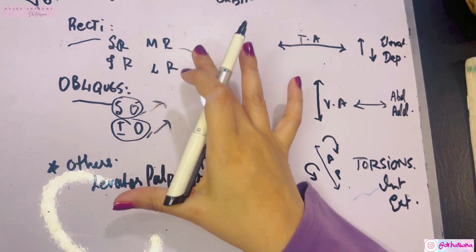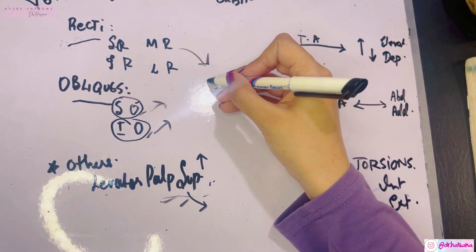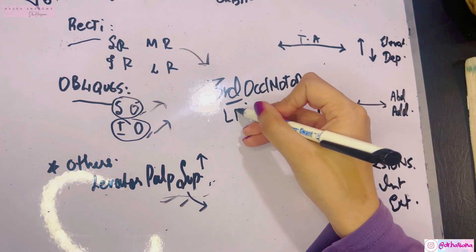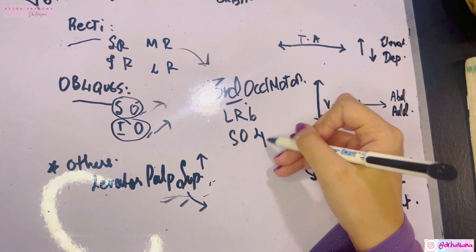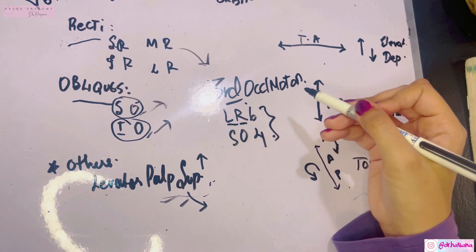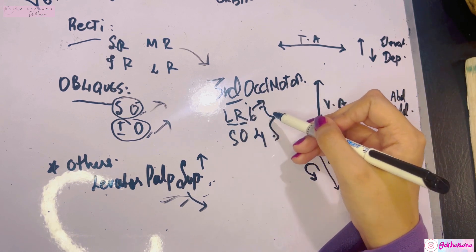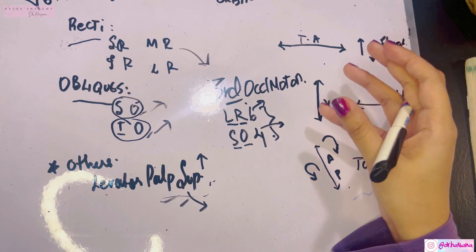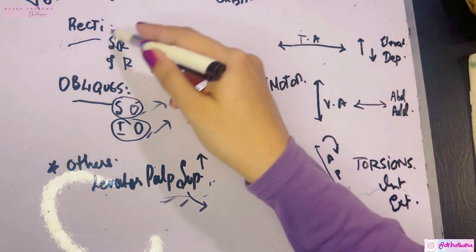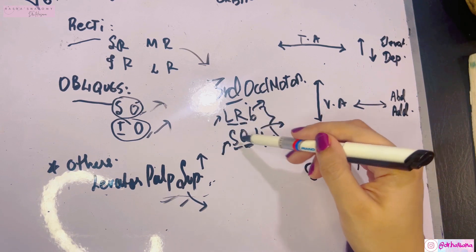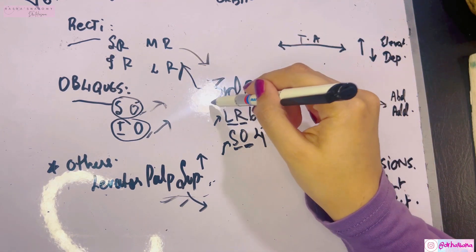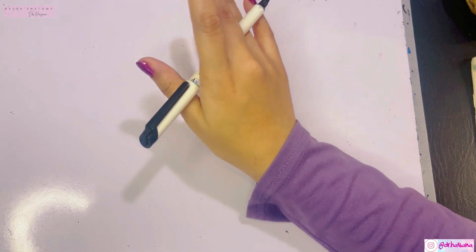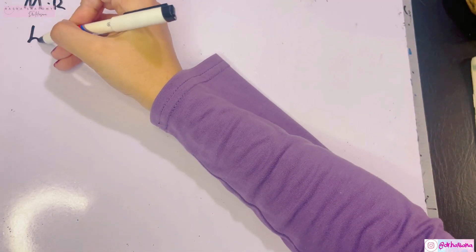Before discussing muscle movements, let's cover nerve supply. All these muscles are supplied by the third nerve — the oculomotor nerve — except for two: remember the formula LR6 SO4. The lateral rectus only is supplied by the sixth abducent nerve, and the superior oblique only is supplied by the fourth trochlear nerve. All remaining muscles are supplied by the third oculomotor nerve.